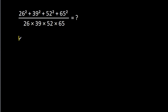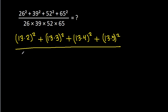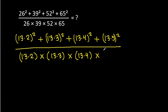26 is 13 times 2, squared; 39 is 13 times 3, squared; 52 is 13 times 4, squared; 65 is 13 times 5. Divided by 26 is 13 times 2, times 39 is 13 times 3, times 52 is 13 times 4, times 65 is 13 times 5.